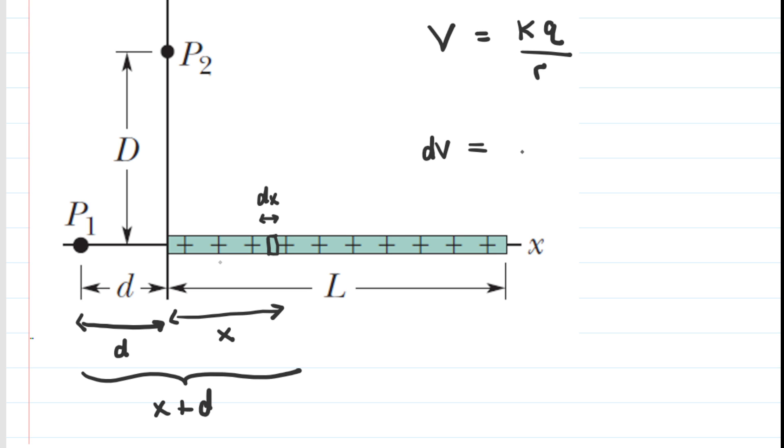And then over here, we have this constant q is going to actually be dq. It's a tiny amount of charge on that tiny little differential element. There is a little bit of charge on that differential element. We call that dq. And then that's going to be over the distance from our differential element to point P1. We've said that that distance is x plus d.